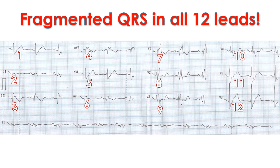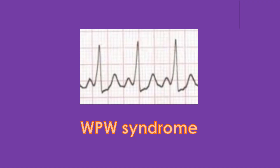Those with increased QRS duration have higher mortality on long-term follow-up after corrective surgery. Wolff-Parkinson-White syndrome can be associated with Ebstein's anomaly due to accessory atrioventricular bypass tracts, and patients can present with reentrant supraventricular tachycardia.